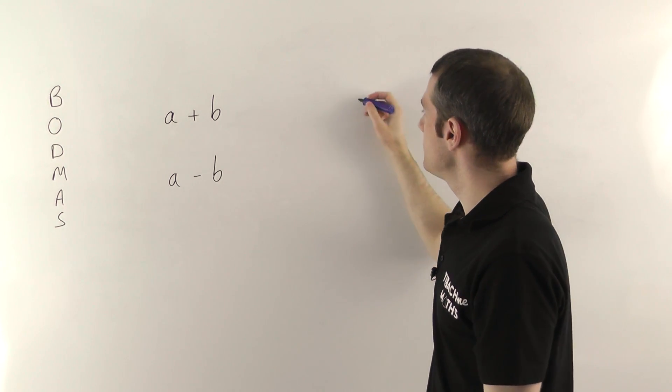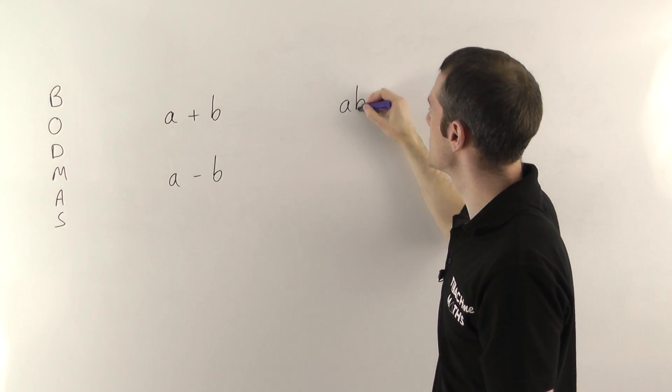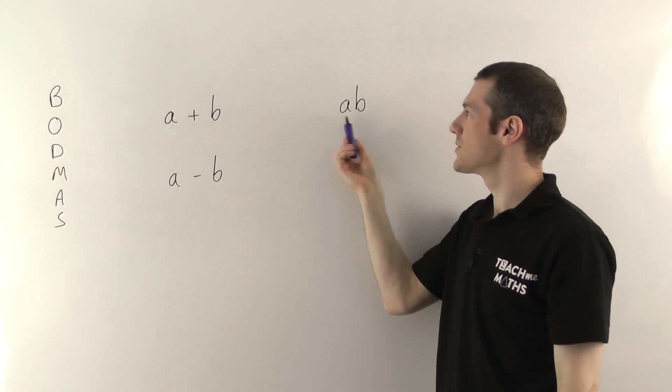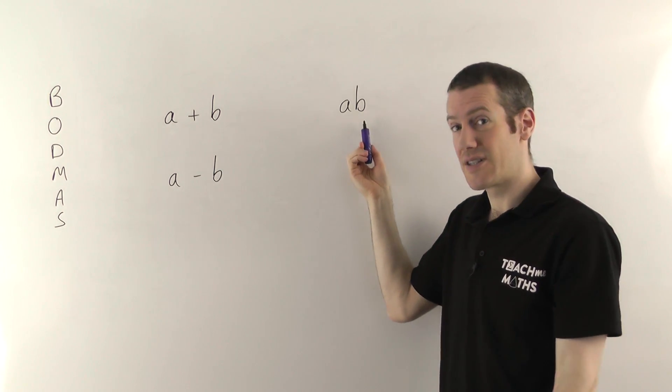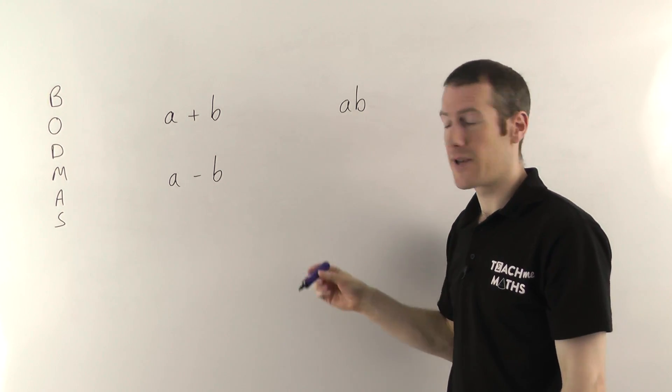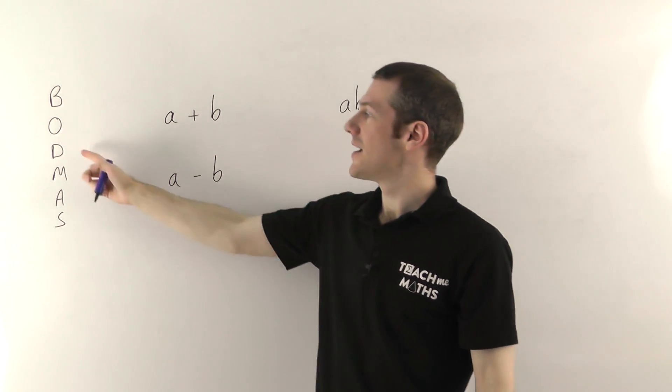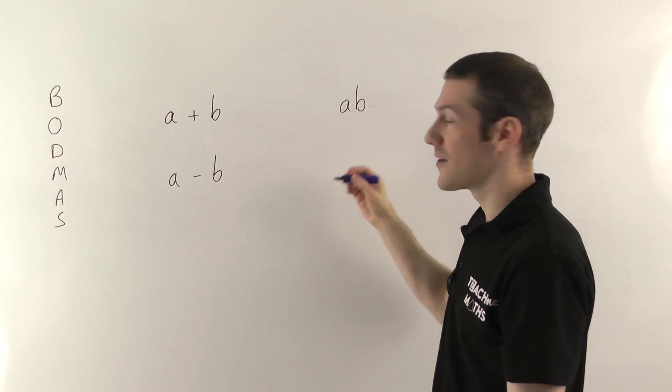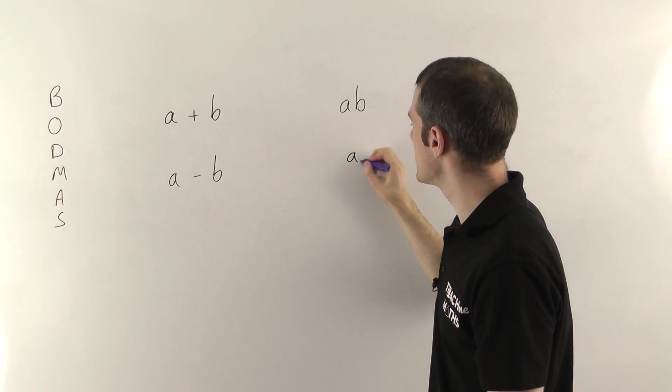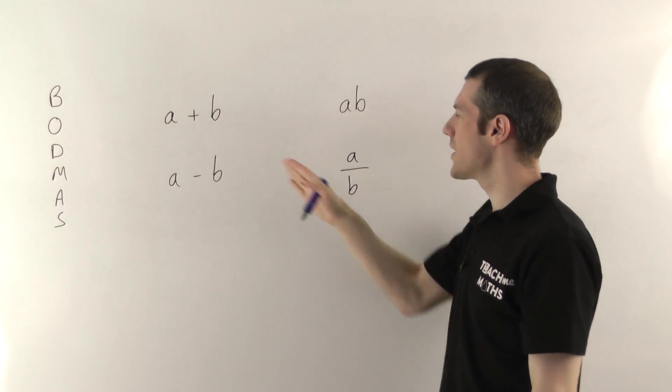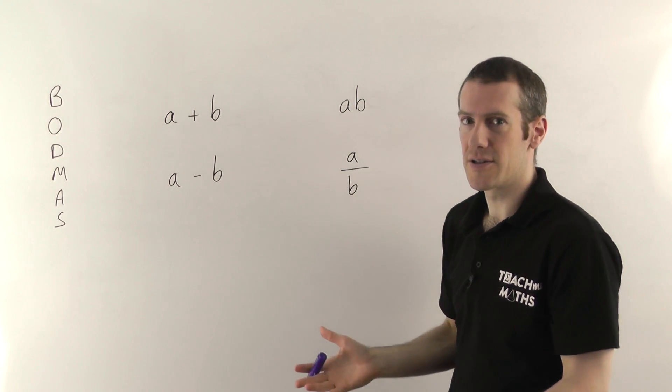Alternatively, we could multiply them. So you could have a times b. And again, remember, if you want to indicate multiplication in algebra, you just write the two things next to each other. That means a times b. Or you could indicate a divided by b. And remember, we're going to do this with fractions. So a divided by b. So that's the way you write the four operations.